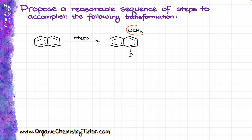One substituent is going to be a methoxy group, which is an ether, so probably we are going to be utilizing some sort of a Williamson ether synthesis-like strategy to put that on. In order to put the oxygen onto the aromatic ring, we probably are going to be using some sort of a diazonium strategy, which means that part of our synthesis is going to take quite a few steps with varying reactions.